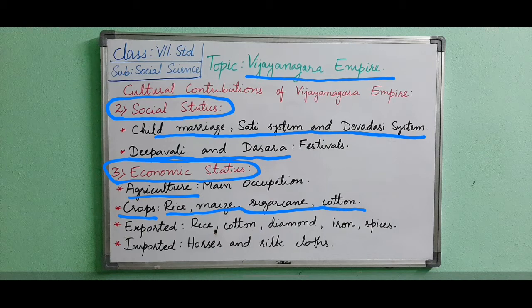They had trade links with other countries. Rice, cotton, clothes, iron, diamonds, sugar, musk, and sandalwood were exported. Exported means when we are giving goods to others. They were exporting things like cotton, rice, and diamonds to other countries.